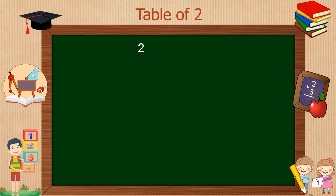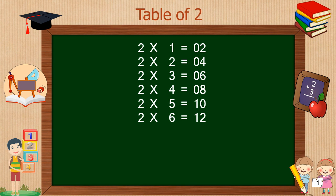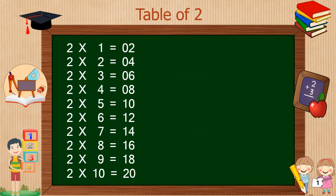Table of 2: 2 times 1 is 2, 2 times 2 is 4, 2 times 3 is 6, 2 times 4 is 8, 2 times 5 is 10, 2 times 6 is 12, 2 times 7 is 14, 2 times 8 is 16, 2 times 9 is 18, 2 times 10 is 20. This is the simplest table for most students.